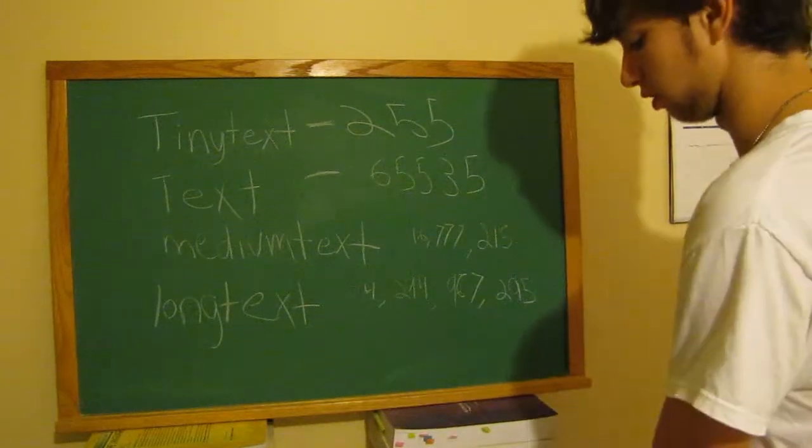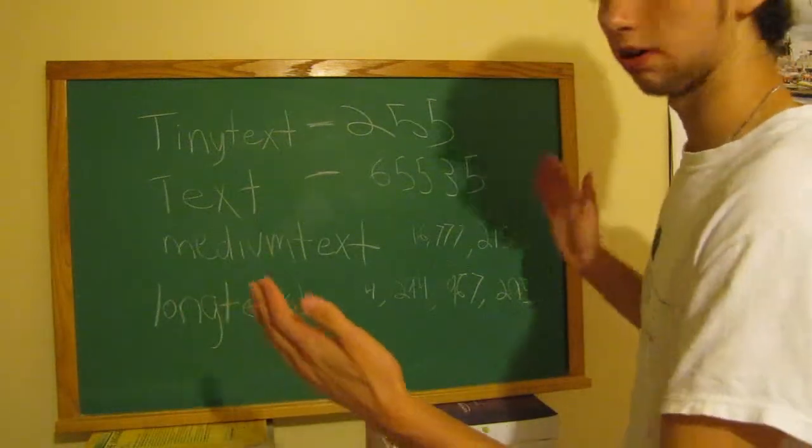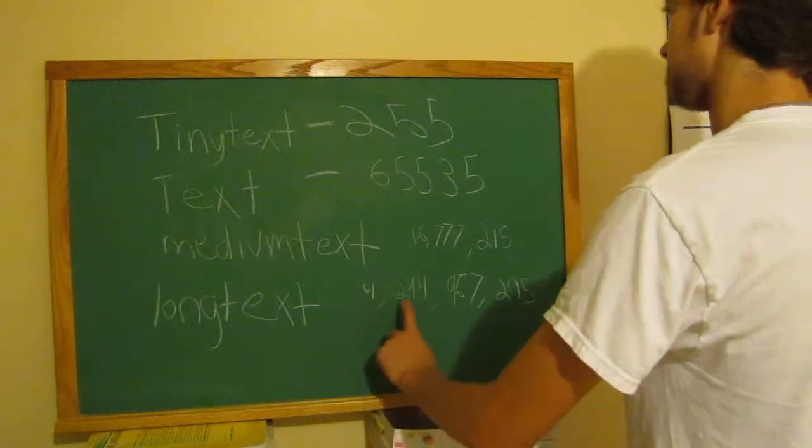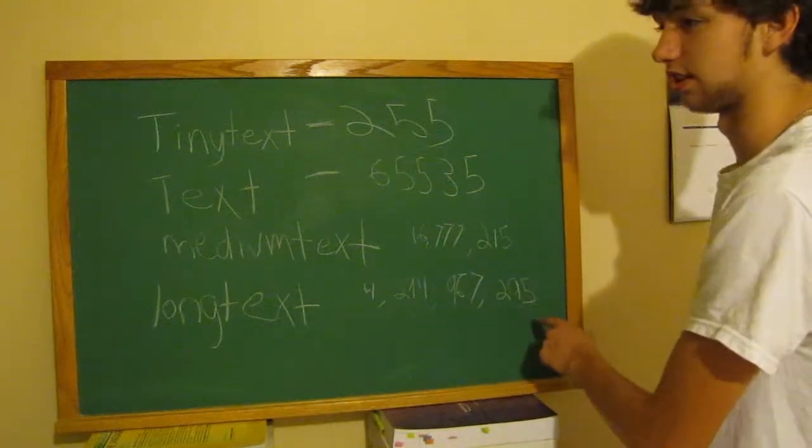So, tiny text gives you an amount of characters from 0 to 255. Alright, but long text down here allows for 4,294,967,295.